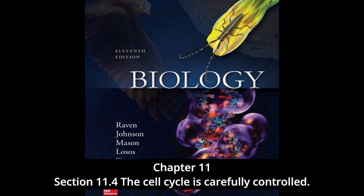The disadvantage of using such a clock to control the cell cycle is that it is not very flexible. A more flexible approach is to let the completion of each phase trigger the beginning of the next, like a runner passing a baton in a relay race. Until recently, biologists thought this type of mechanism controlled cell division. However, we now know that eukaryotic cells employ a separate centralized controller at critical points in the cell cycle, where further progress depends upon a central set of go/no-go switches regulated by feedback from the cell.